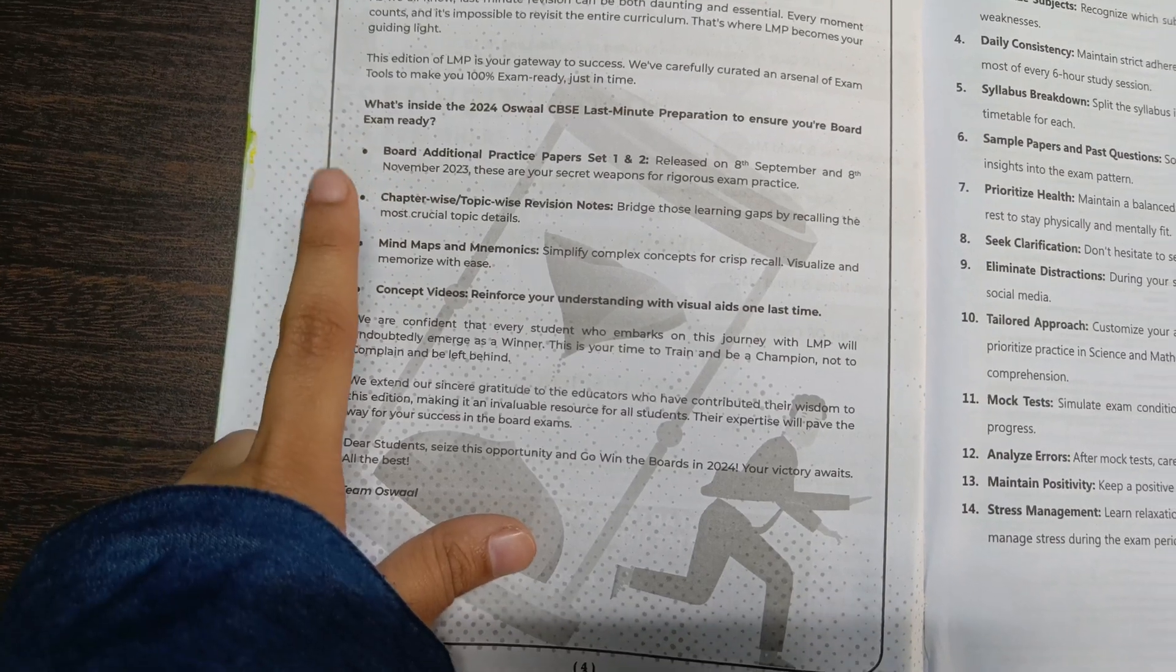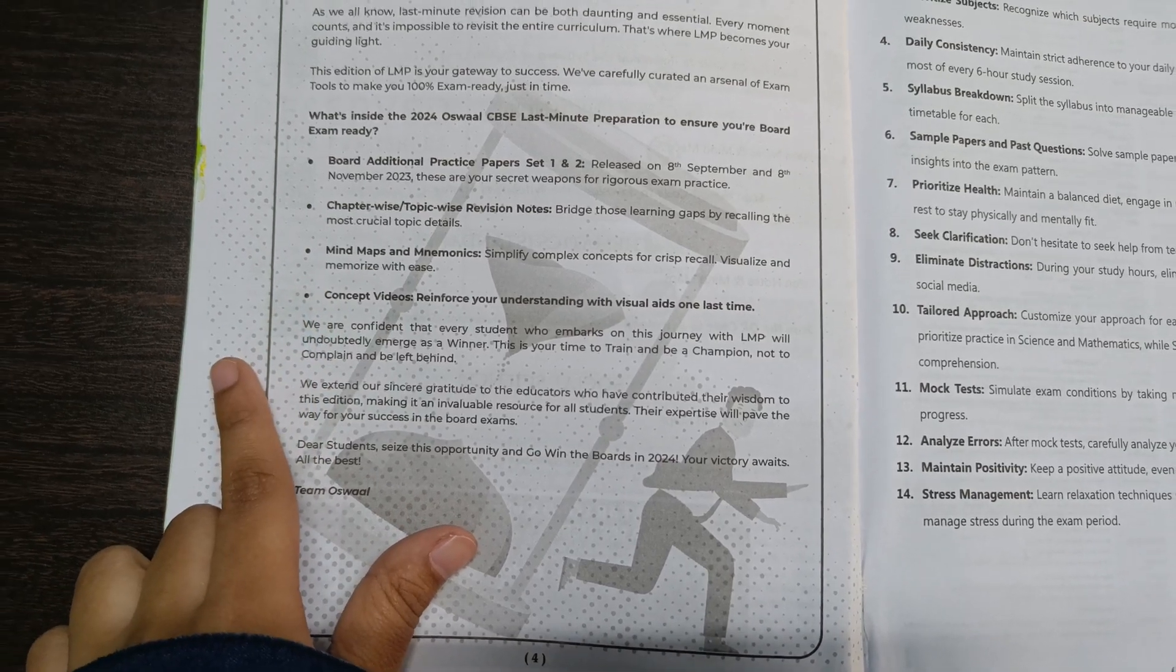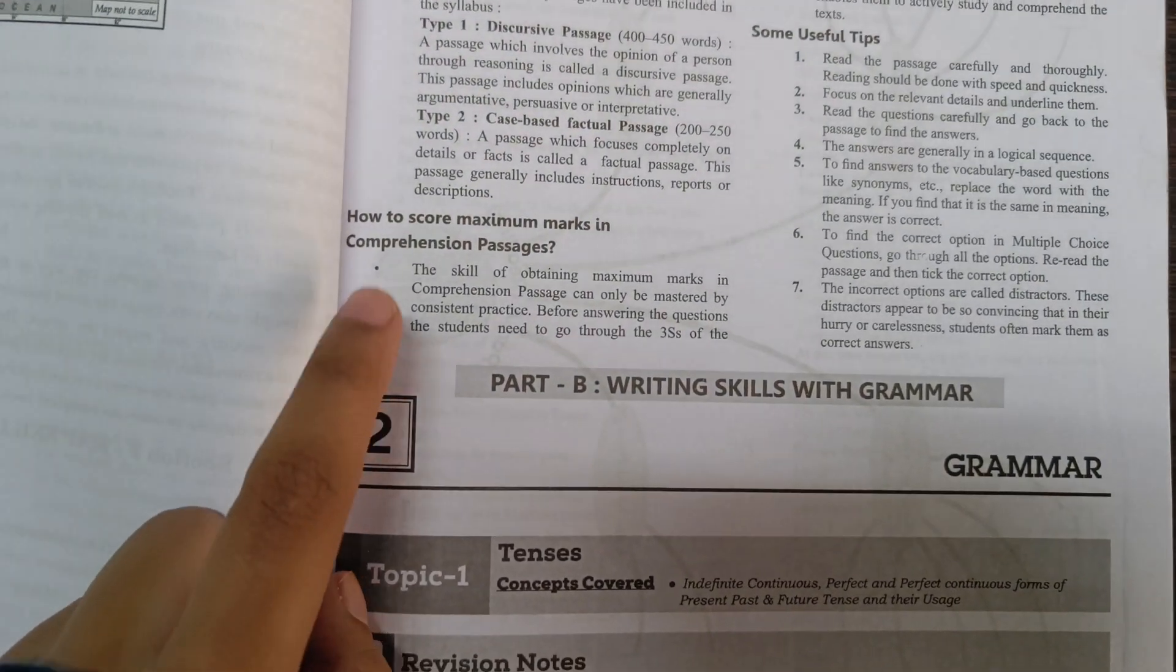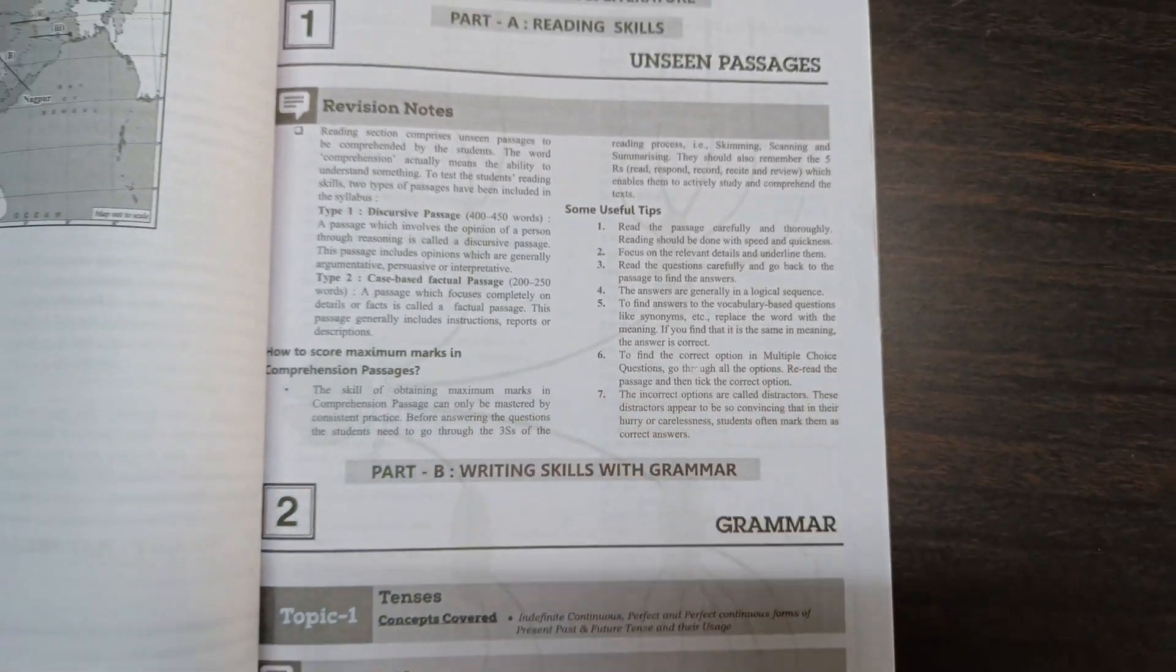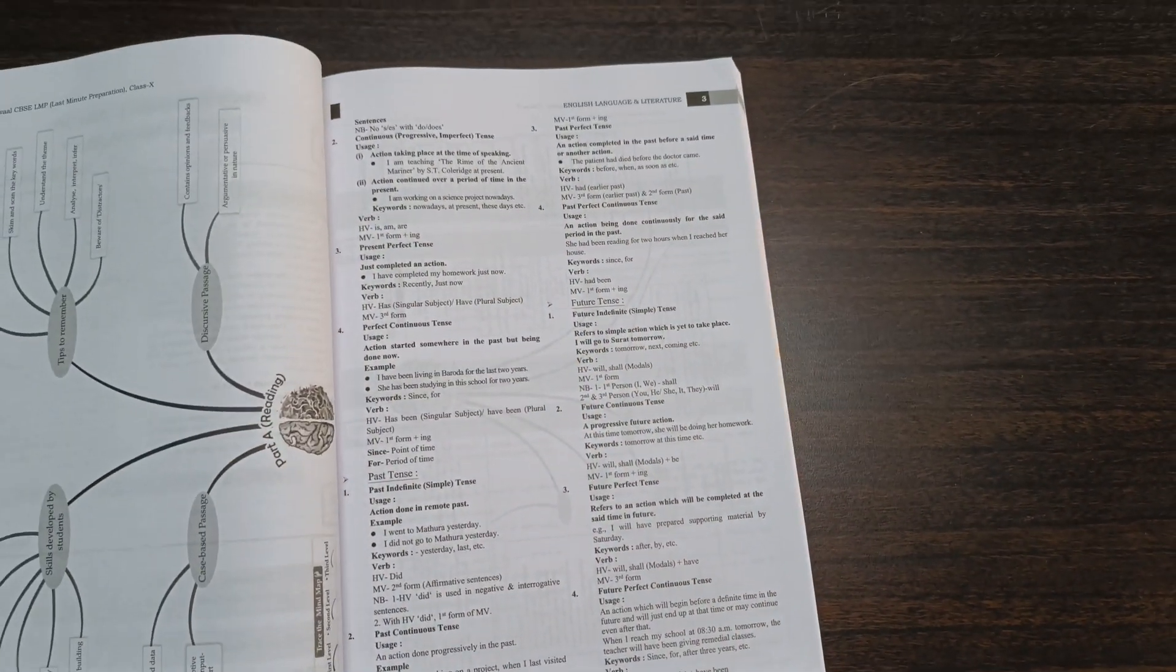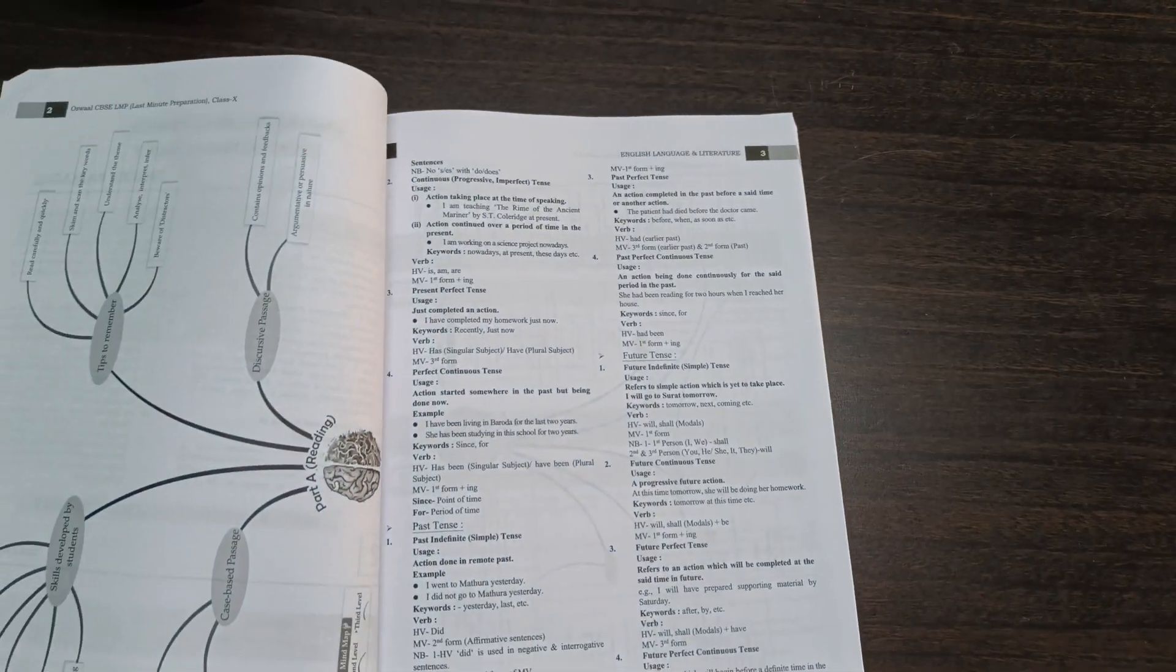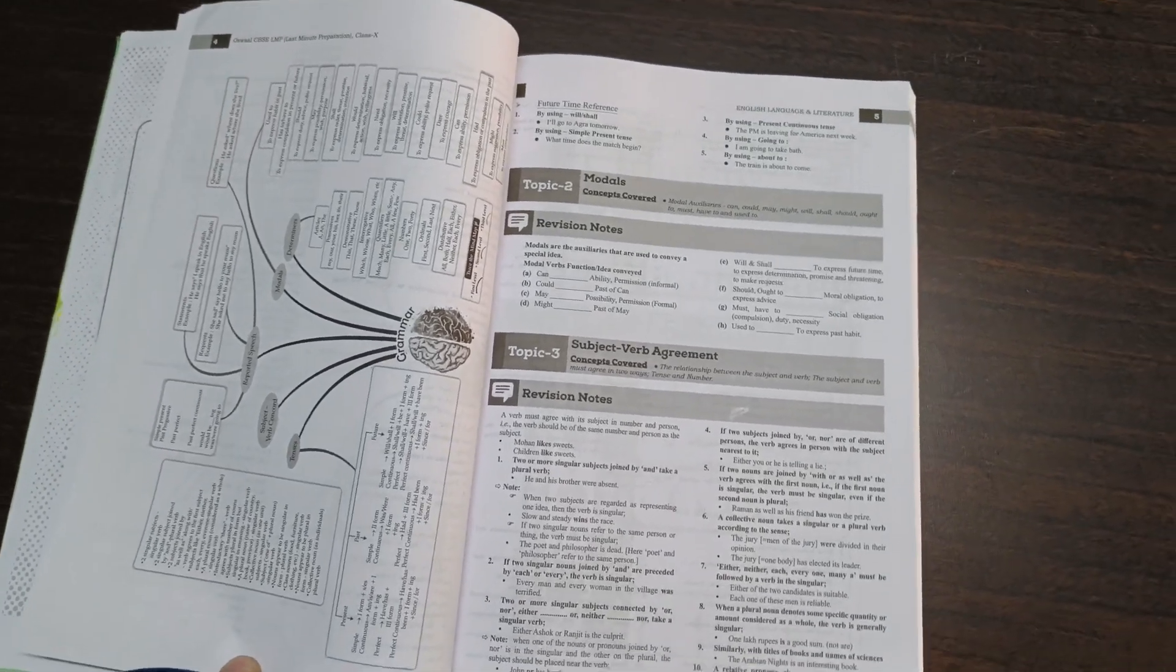Let's dig into the contents of this book. First we're provided with strategies regarding how we can make our preparation better. The book includes additional sample papers released by CBSE this year, topic-wise notes of every subject, mind maps and mnemonics, and videos for visual learning. These are the notes of English and here you can see we also have tips regarding how to approach a question, write an answer, and use our time efficiently. This book contains notes of grammar, writing section, and reading section according to the latest CBSE syllabus. We're also provided with mind maps which are very useful when we have a short period of time like half an hour or one hour before exams but want to recall our topic efficiently.